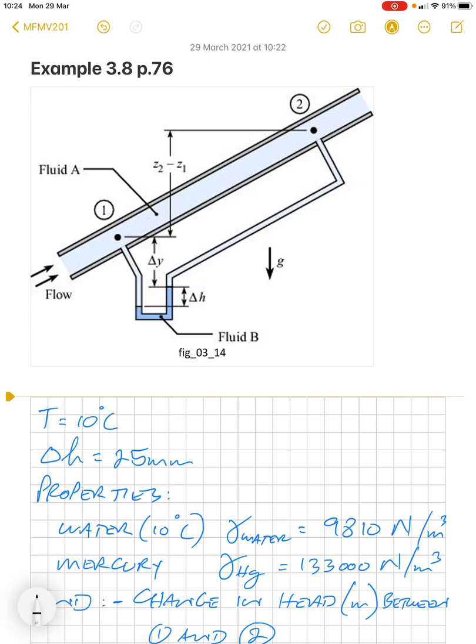We're given the difference in height from the one side to the other side of mercury 25 millimeters. The water is flowing at 10 degrees C and we're asked to calculate what is the difference in head between one and two.